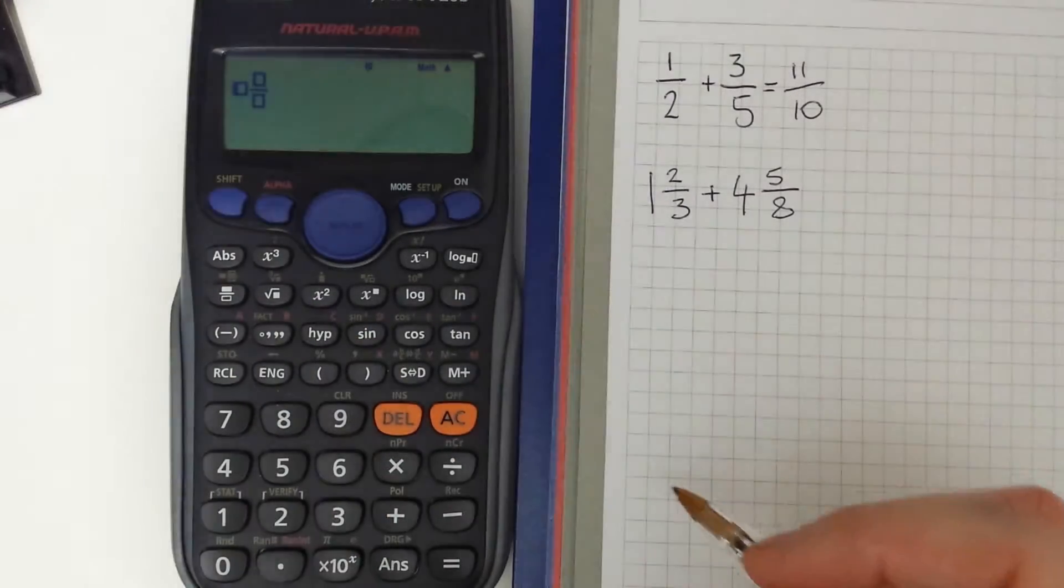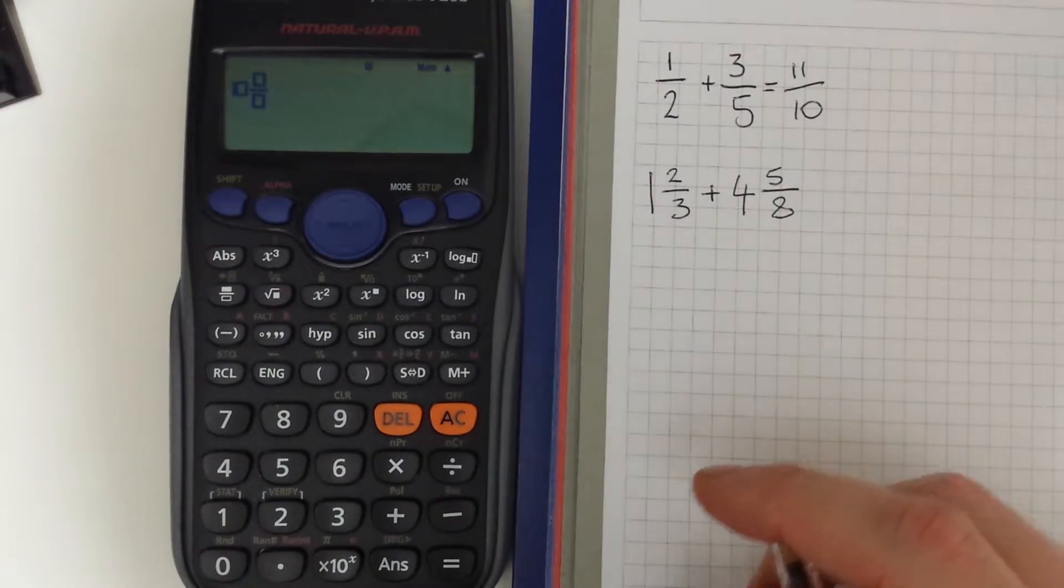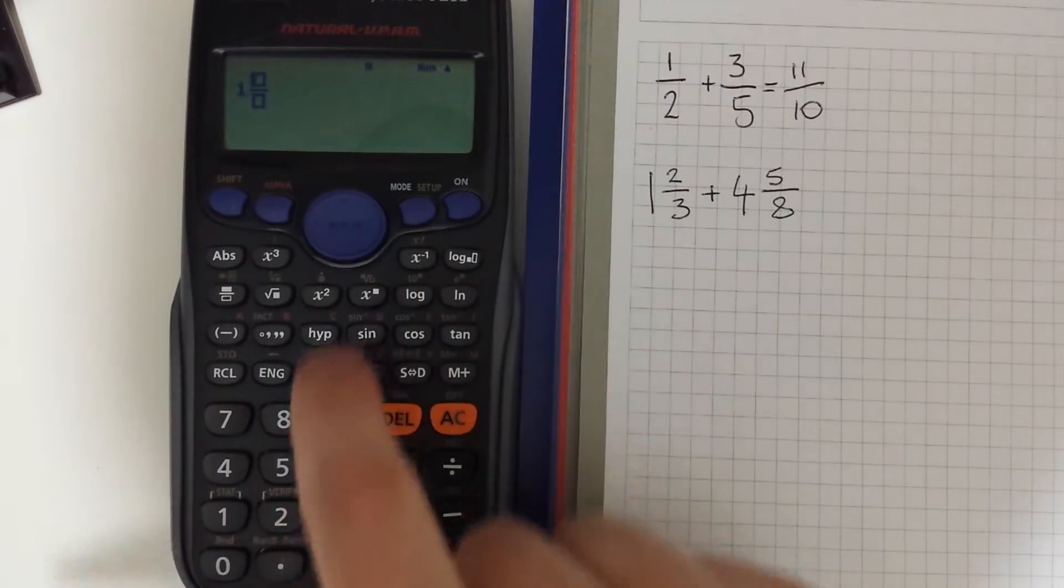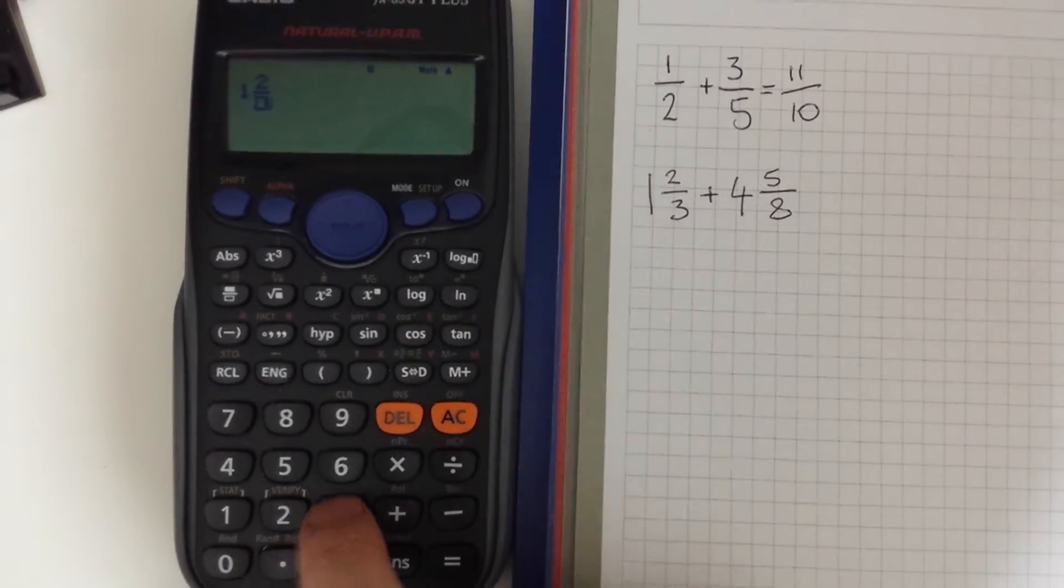So now we can enter a mixed number fraction just like we did before. So 1 and then we use the navigational pad and 2 thirds.